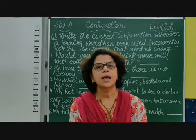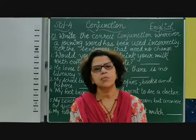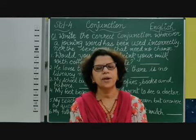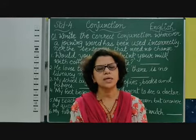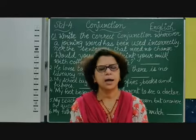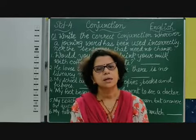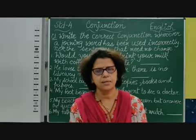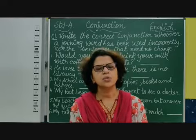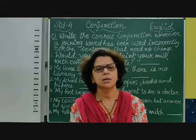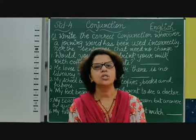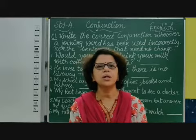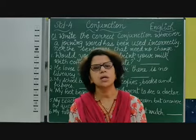Children, we have studied that different conjunctions are used for different purposes. We use 'and' when we are joining two sentences which have similar ideas. 'But' is used when those sentences have different ideas. 'Because' is used when we are giving the reason, the cause. 'Or' is used when there is a choice. In this way, different conjunctions are used in different ways.